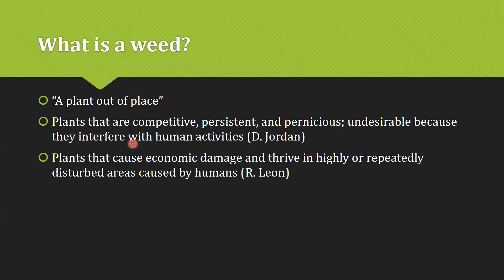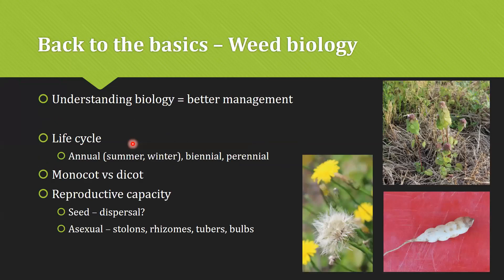When we think about weeds, we need to go back to the basics and understand the weed biology. Understanding that biology will help us better manage those weeds. When we say biology, we're referencing those basic concepts we probably all learned in Master Gardener class or biology. That includes things like the life cycle - is it an annual summer weed, a biennial, a perennial, or does it just come up in the wintertime? Understanding that purple dead nettle is a winter weed will help us know how to target and manage it better. Also understanding monocot versus dicot - is it a broadleaf, a grass, a sedge, or wild garlic?